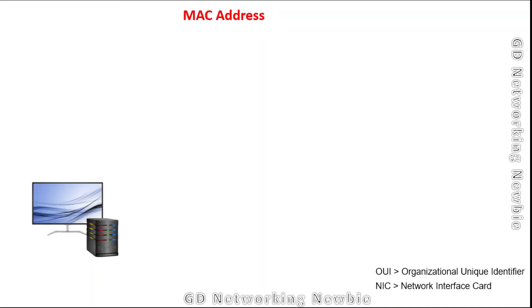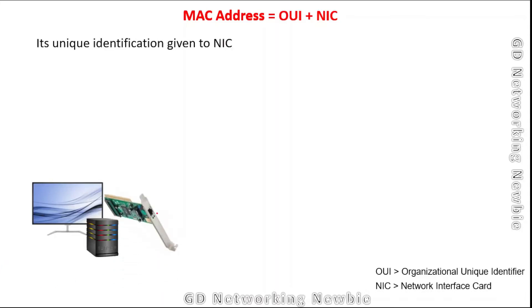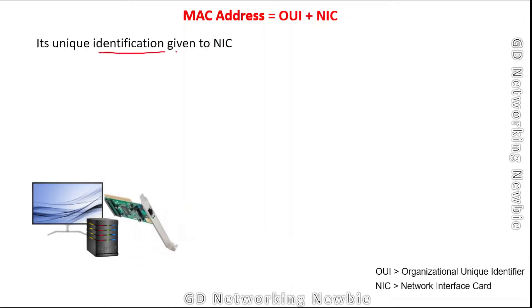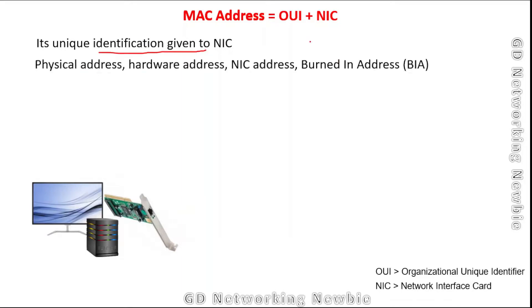In this video we are going to discuss MAC address composition. A MAC address is composed of two parts: OUI and NIC. Every computer that is part of a network has a network interface card, and every network interface card is given a unique identification. This unique identification has many other names — physical address, hardware address, NIC address, or sometimes burn-in address.